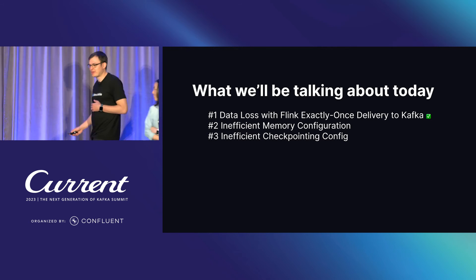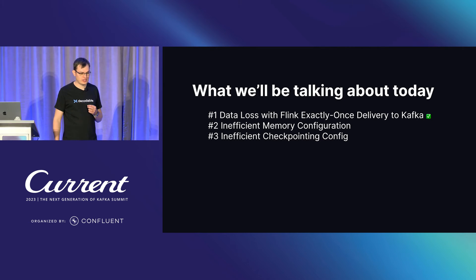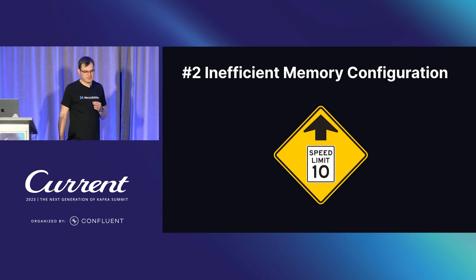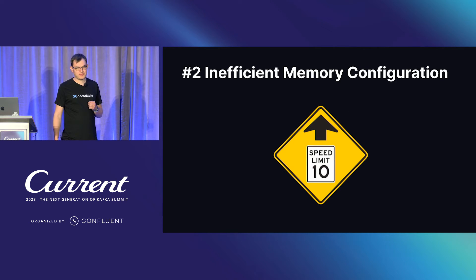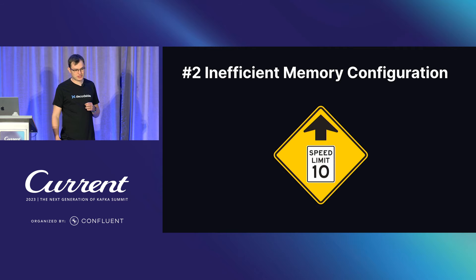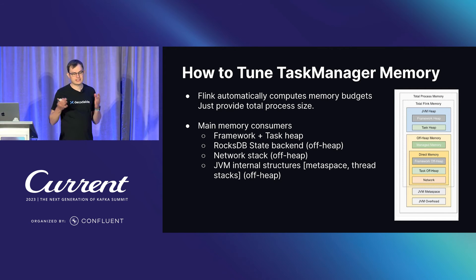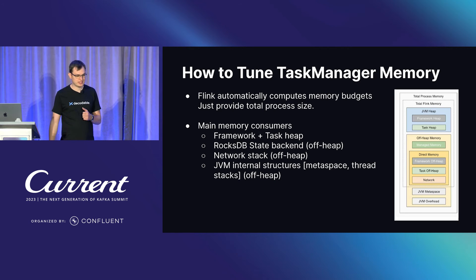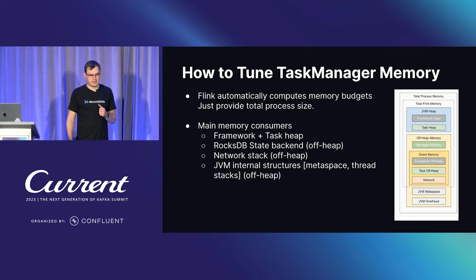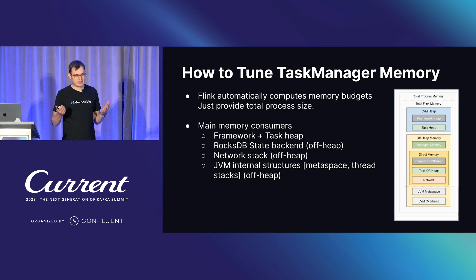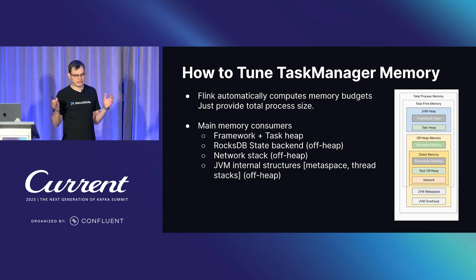The next topic is improving overall Flink configuration for resource efficiency and performance. At Decodable, with very different customer workloads — from simple ETL pipelines to sophisticated large joins — Flink jobs greatly benefit from making the most use out of available memory. The most important memory configuration is the task manager memory, because the task manager is where actual data processing happens. Because memory management on a JVM is hard, Flink automatically computes memory budgets based on the total process size you configure.